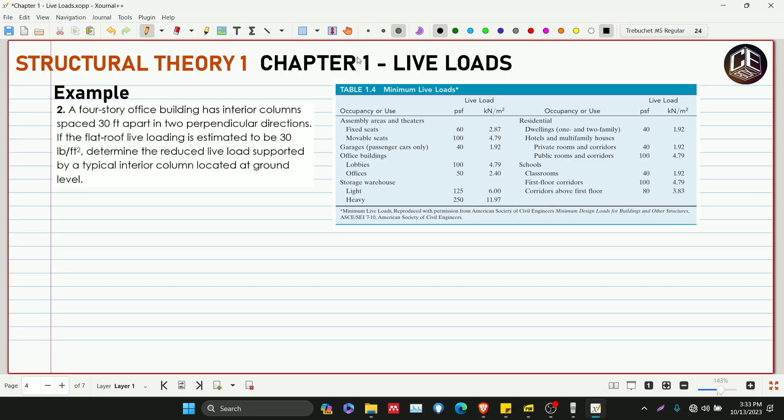Hello guys, welcome back to Citybox Tutorial Channel. This is our example number two for Chapter 1, Live Loads of Structural Theory 1. A four-story office building has interior columns spaced 30 feet apart in two perpendicular directions. If the flat roof live loading is estimated to be 30 pounds per square foot, determine the reduced live load supported by a typical interior column located at the ground level.